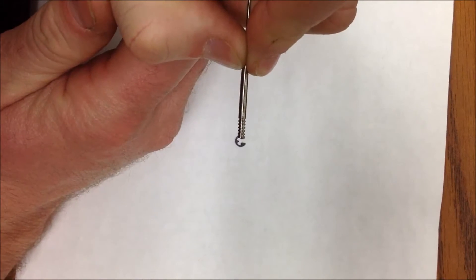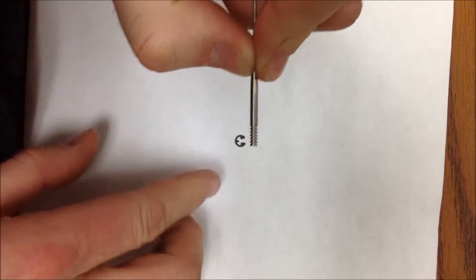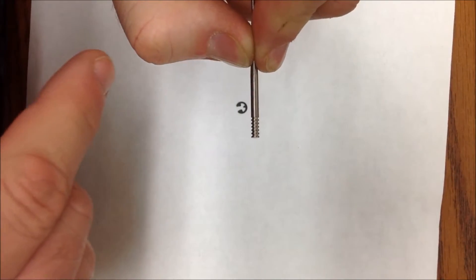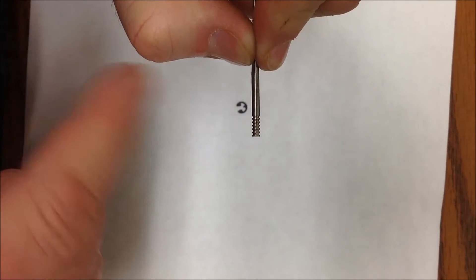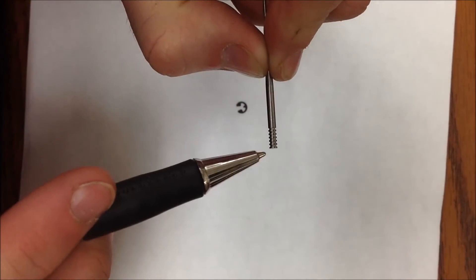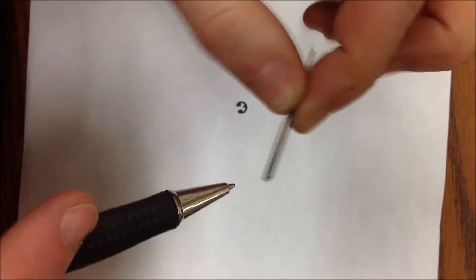We're going to focus today on how to properly install the e-clip onto an adjustable jet needle. See here we have these different notches, and they always start from the top and work their way down.